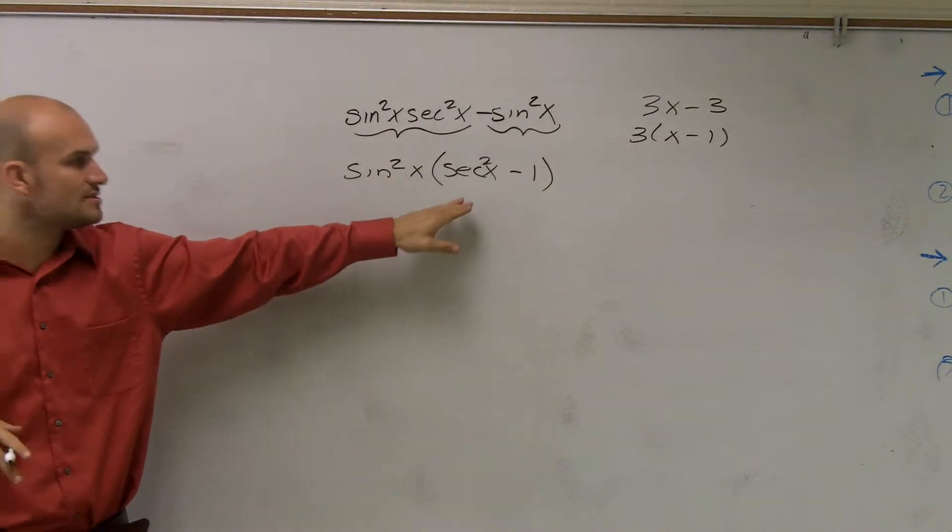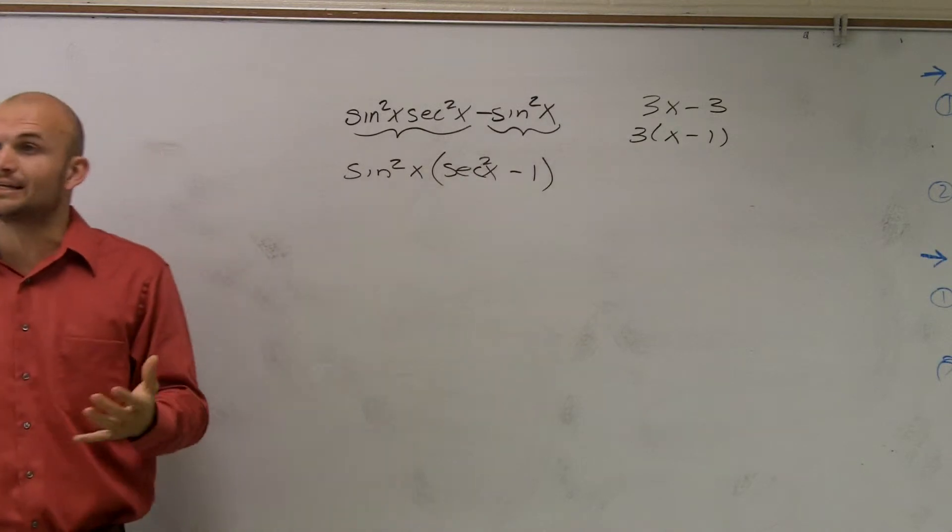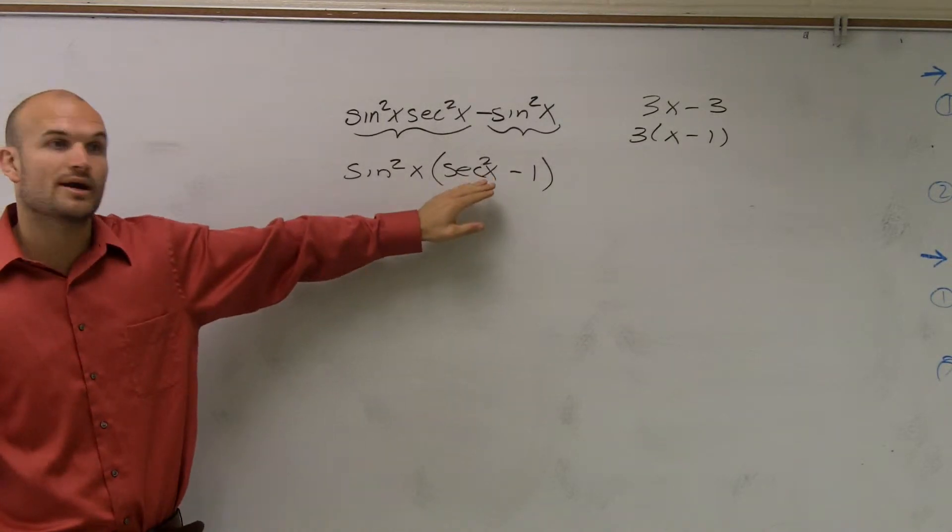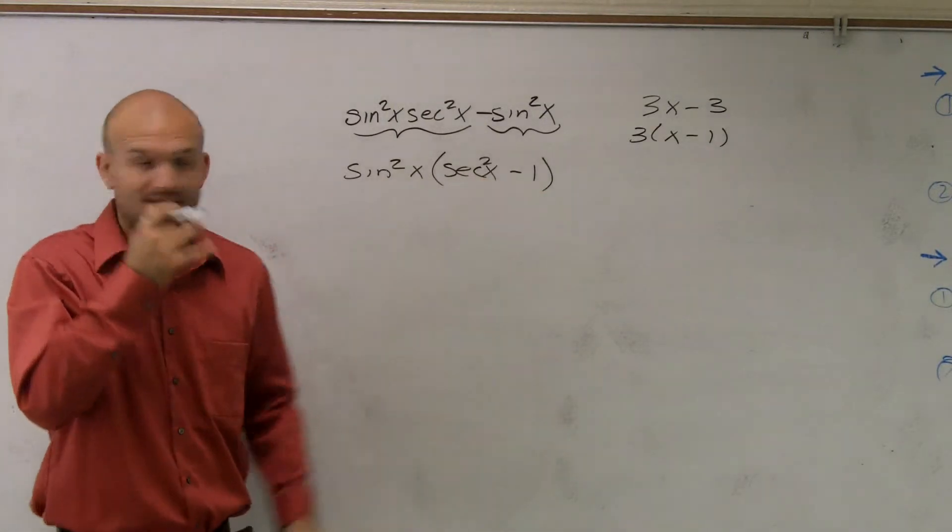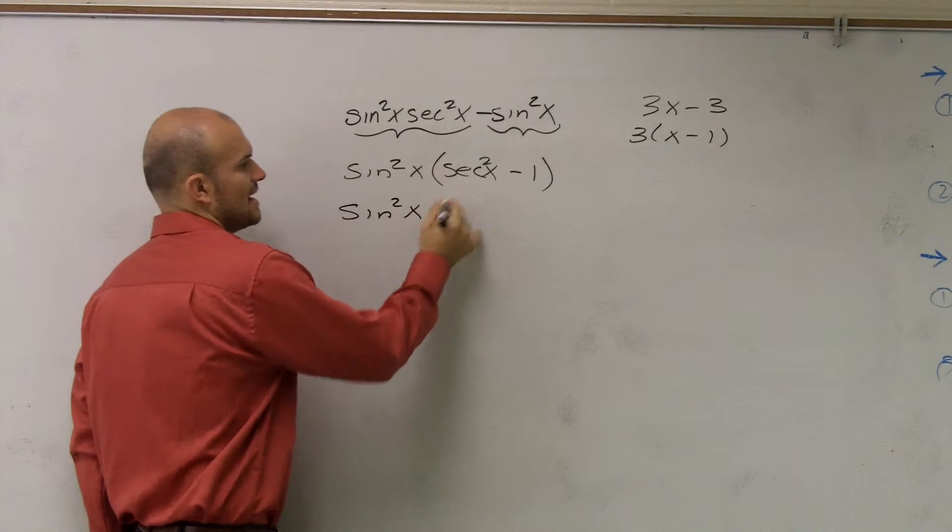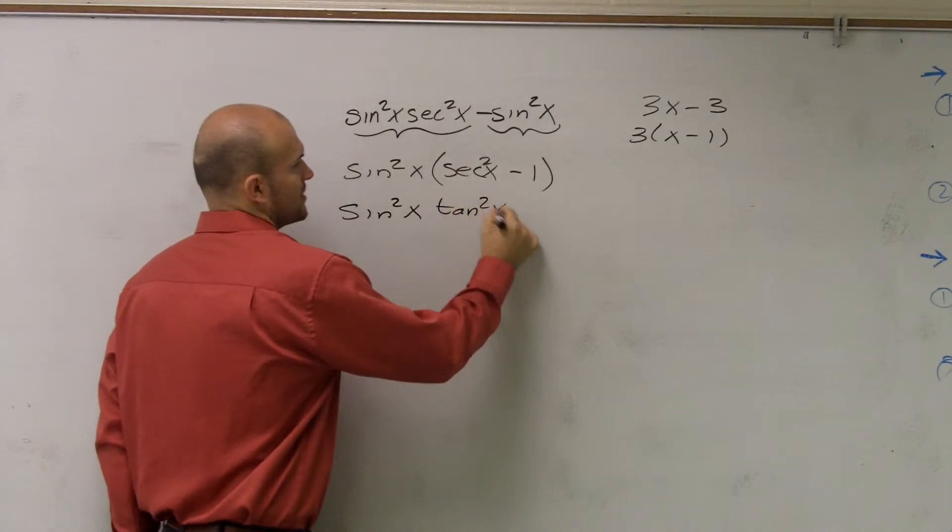So then the next thing I can do is I need to see if I can use my trig identities to simplify this. So remember, if you have secant squared, I can use that with the trig identity. I believe that equals tangent squared of x.